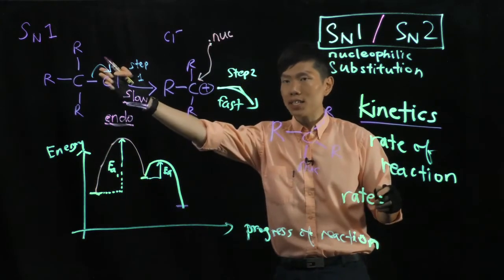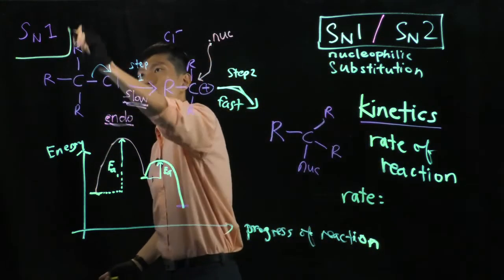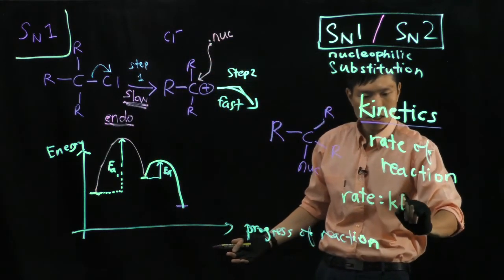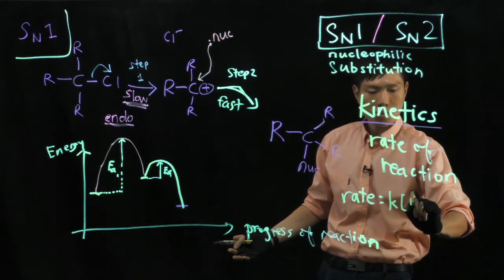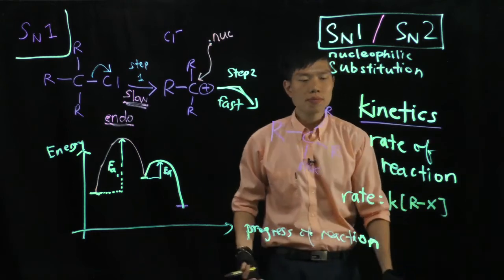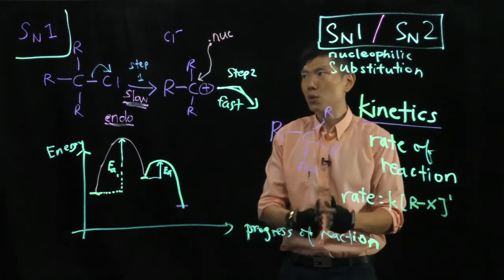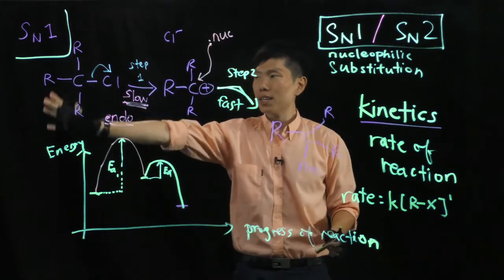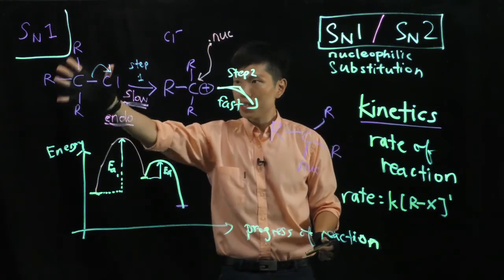So, for SN1 mechanism, the order of reaction will be just one. It depends on the alkyl halide. So, let me just use RX to represent the alkyl halide. And this is power one because there's only one molecule of this that's reacting. There's no other molecules that combine with it in the slower step.